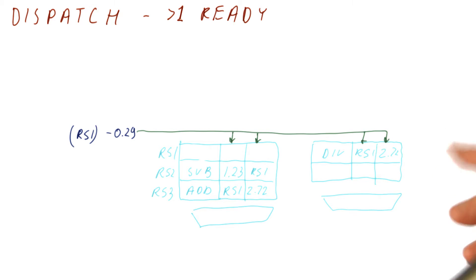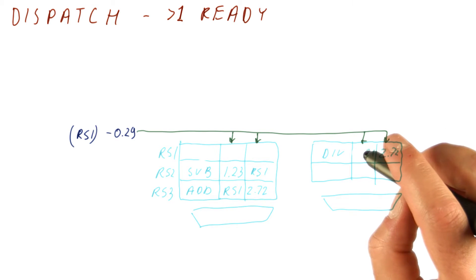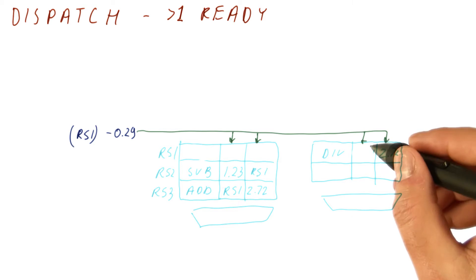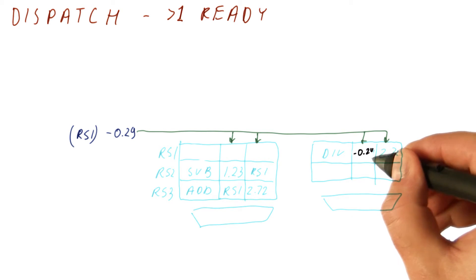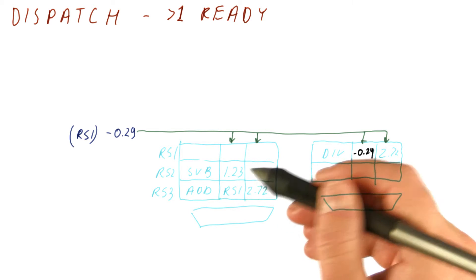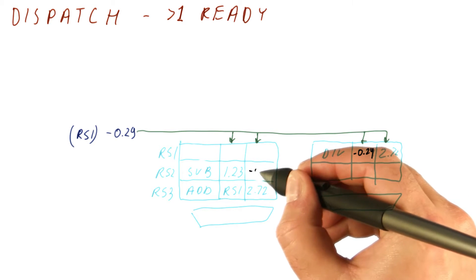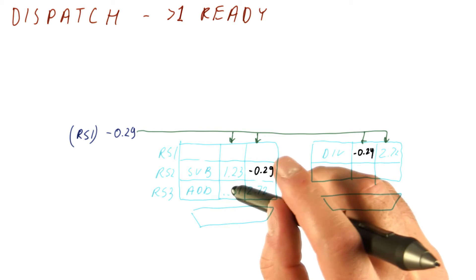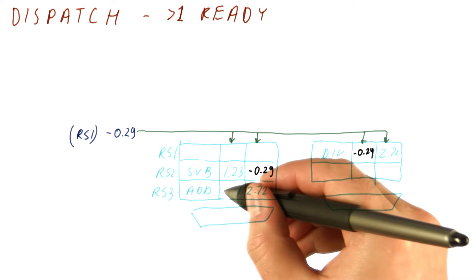We will still capture all of the results that hasn't changed. So here we're going to latch minus 0.29. This doesn't need to match anything here because we already have a value. Here we're going to also latch 0.29, and here we're going to do the same thing.